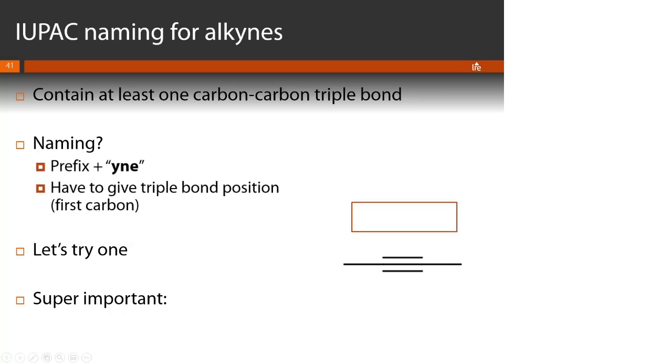And we're going to name these by using the same prefix that we used with alkanes and alkenes, but this time we're going to use the yne suffix, y-n-e. And just like we did with double bonds, you have to give me the position for the triple bond. Okay, so go ahead and pause the video and see if you can give me a name for this molecule right here.